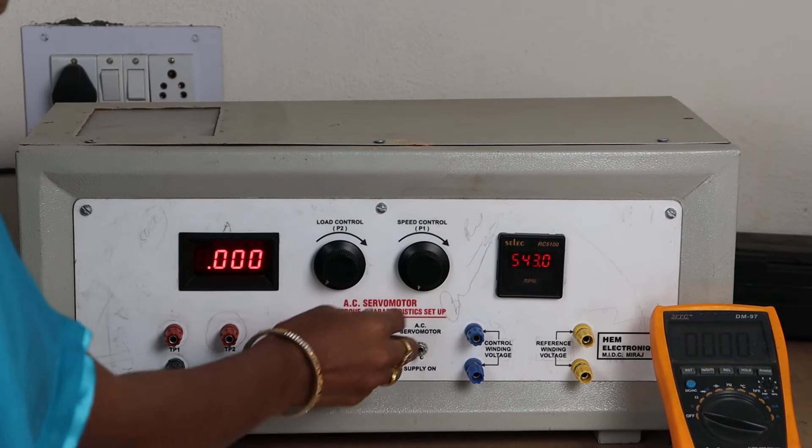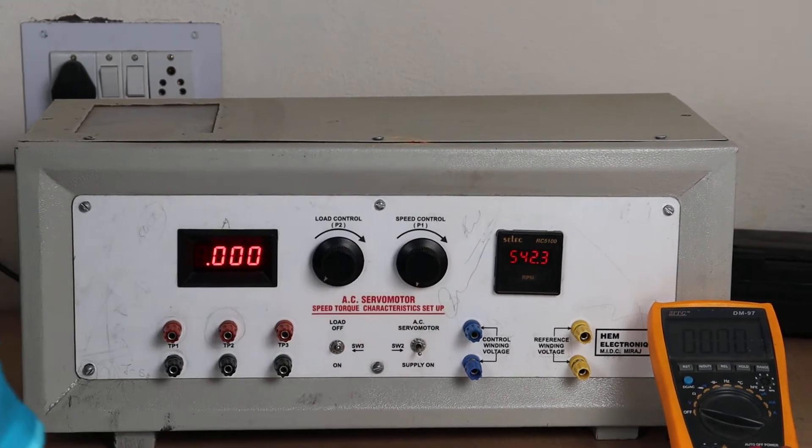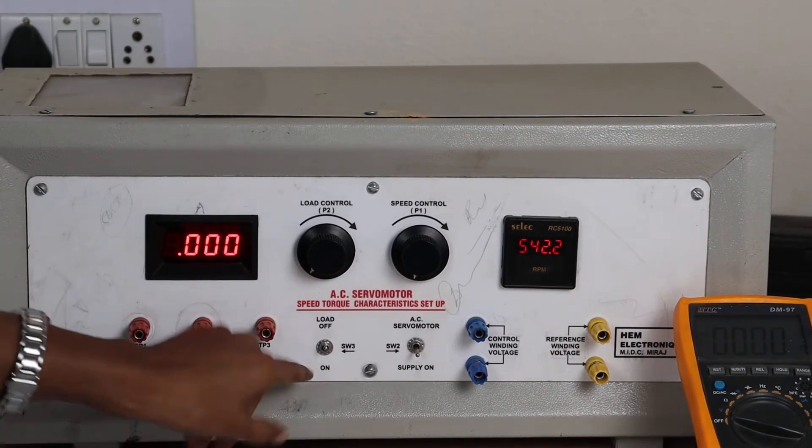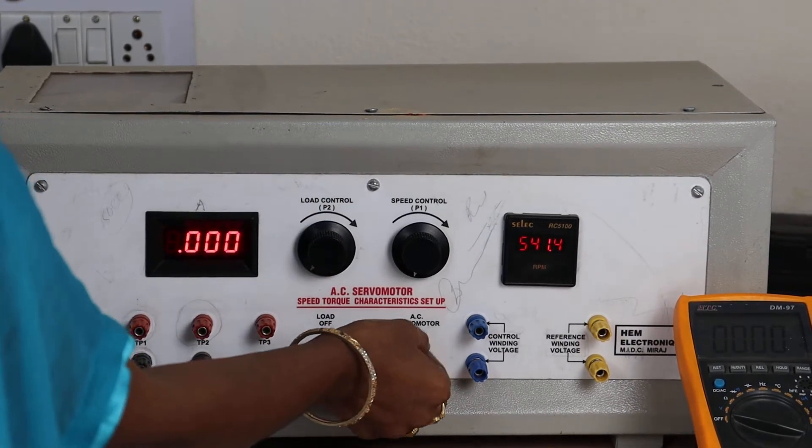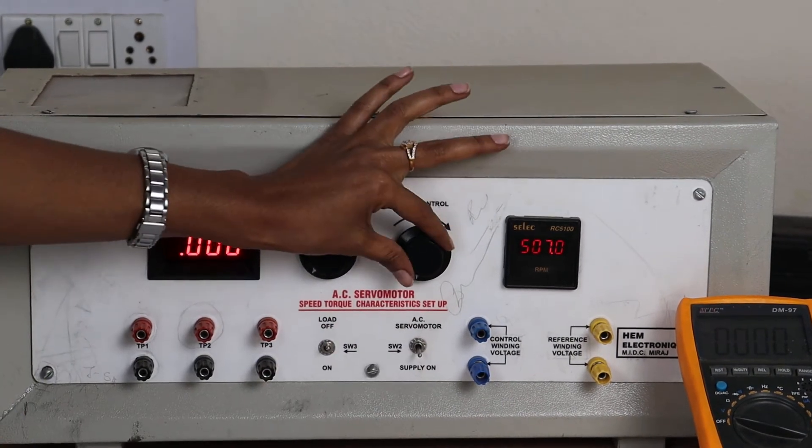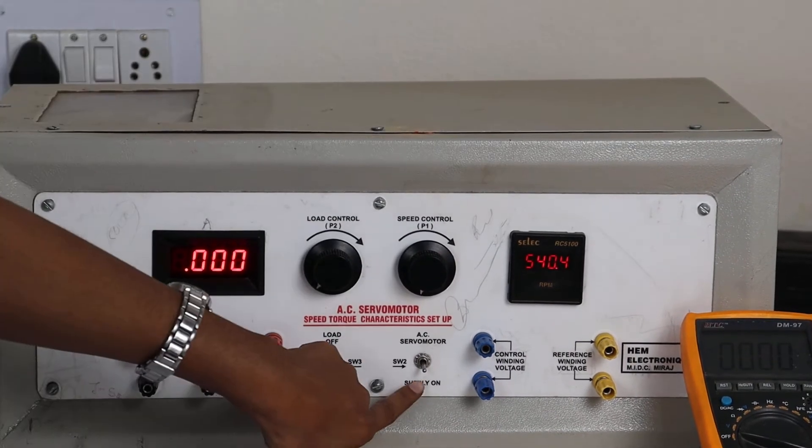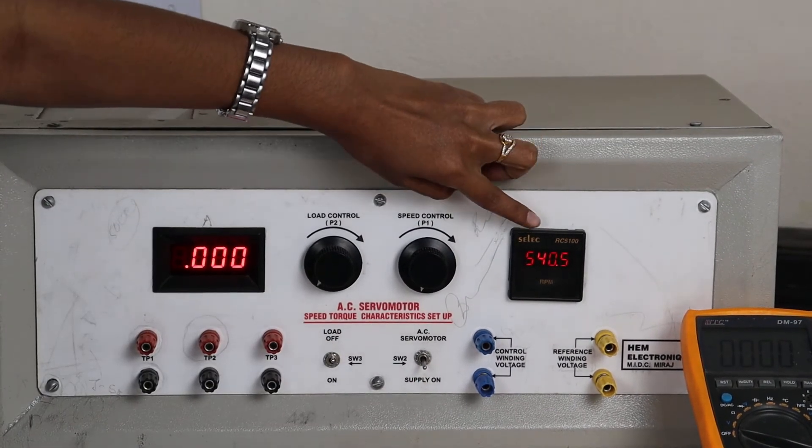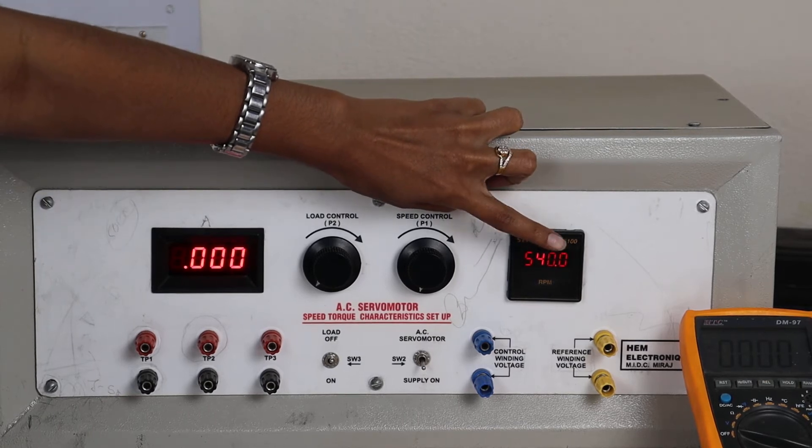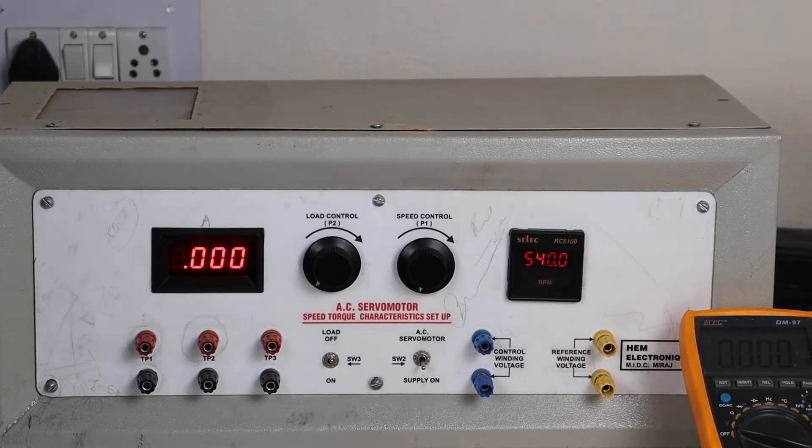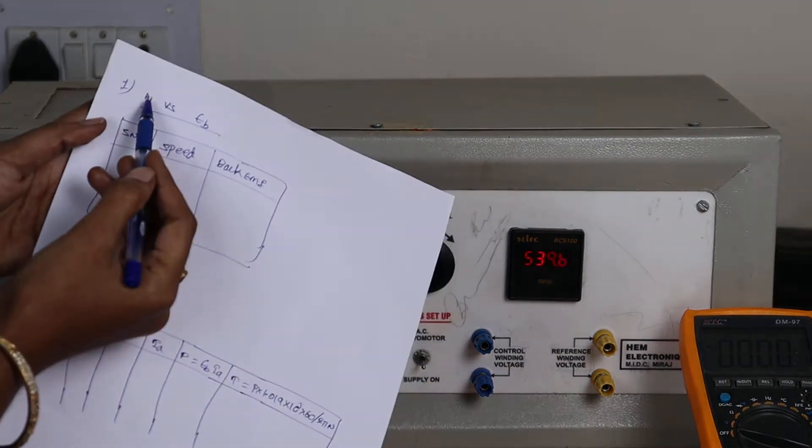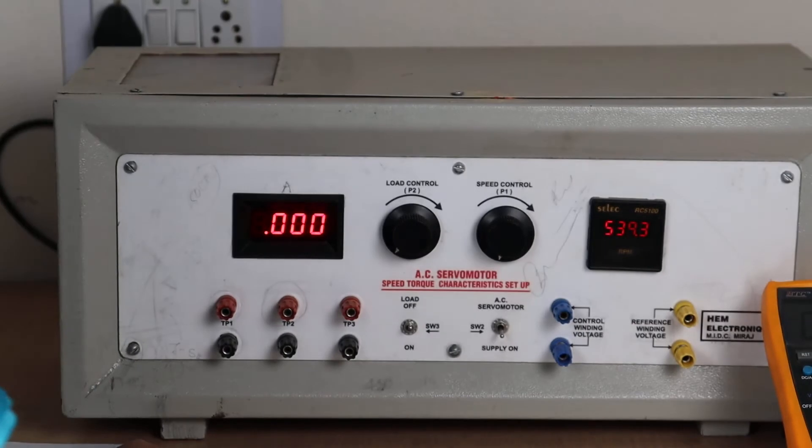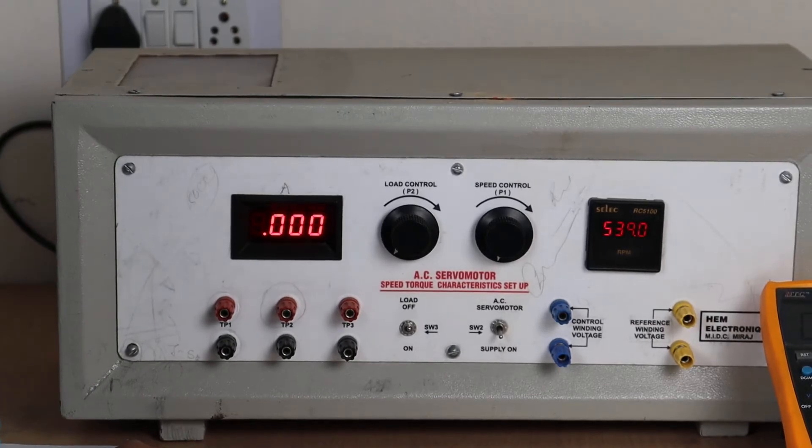So first before applying the speed value here you should check whether the load is in off position or not, then supply on. Automatically whenever you are giving the supply here you can read speed value here, that is 540.